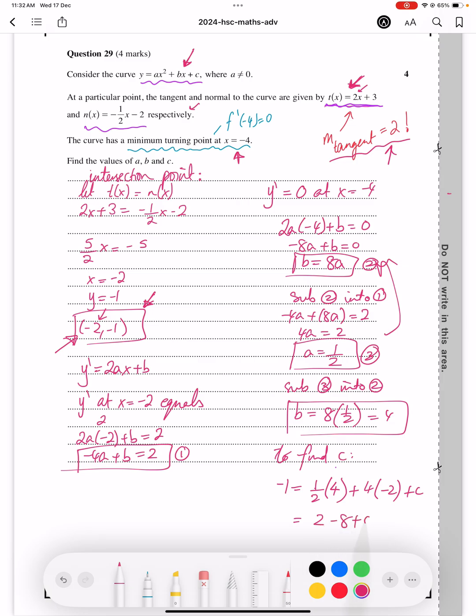So that gives us 2 minus 8 plus c is being equal to minus 1, and so therefore c equals to, if you take that minus 6 to the other side, it becomes plus 6, which equals 5. That is your answer.